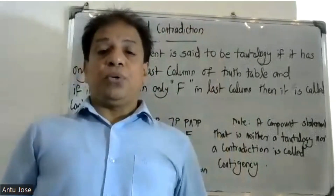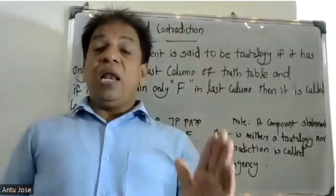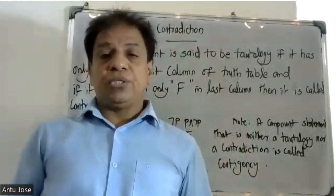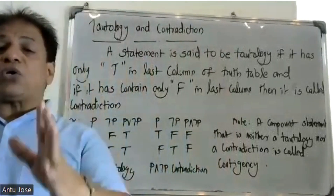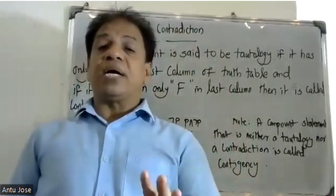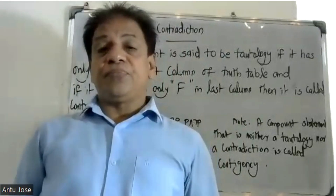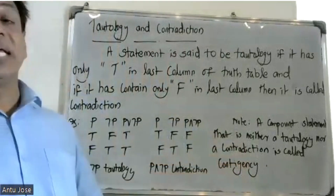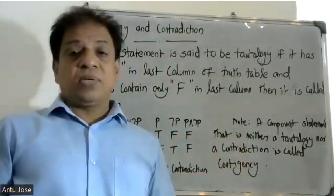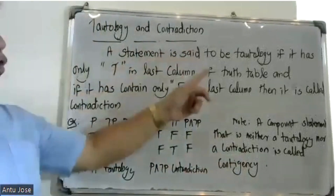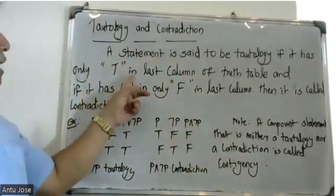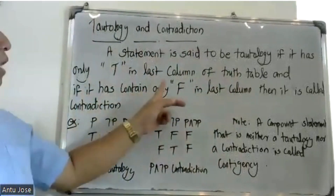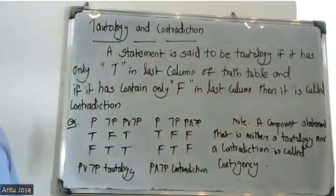If we construct the truth table and all the truth values are true, it is called a tautology. And if the last column of the truth table contains only F, then it is called a contradiction.